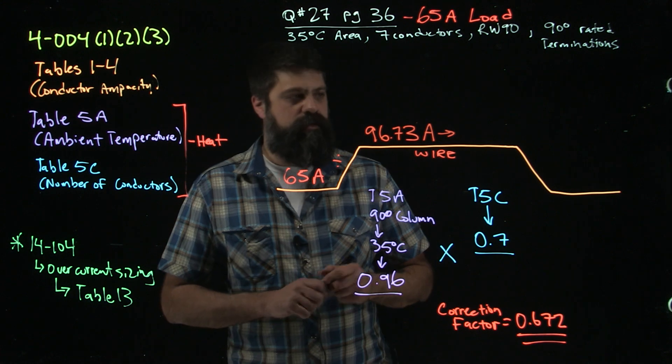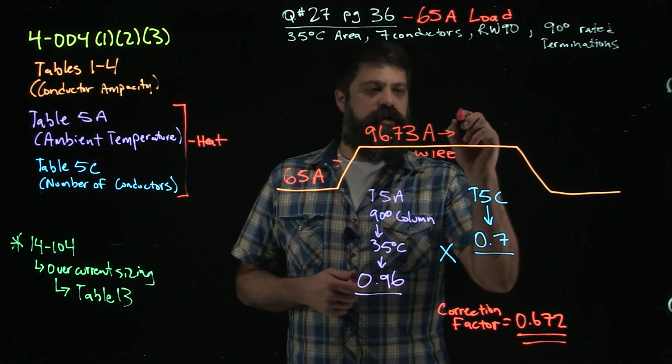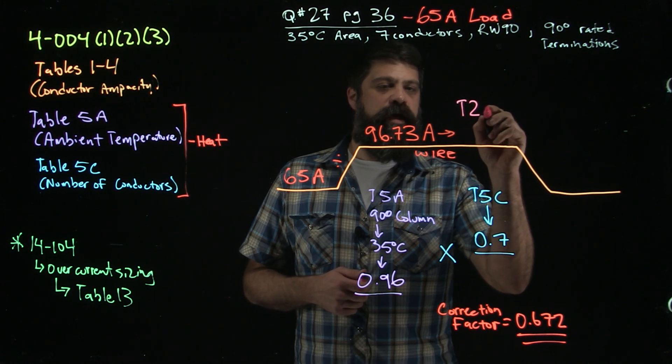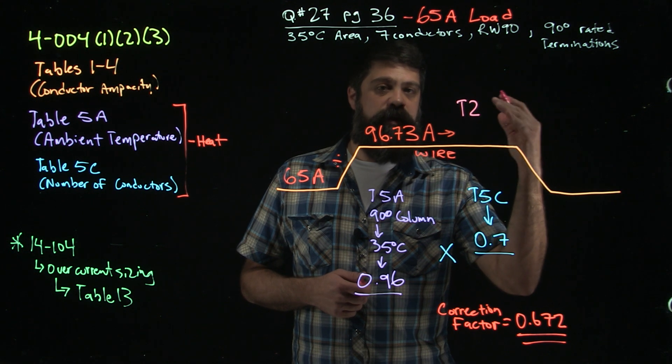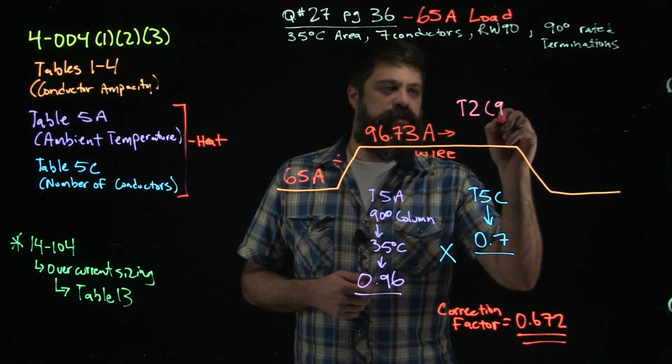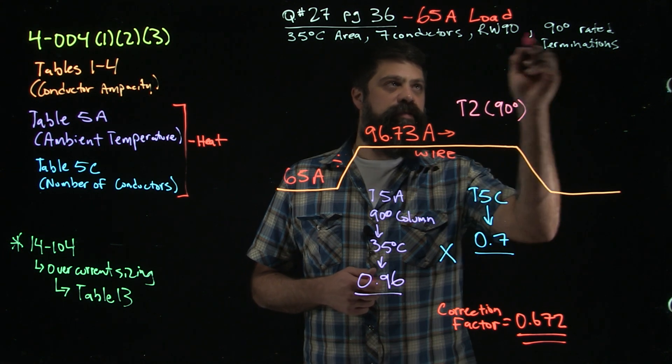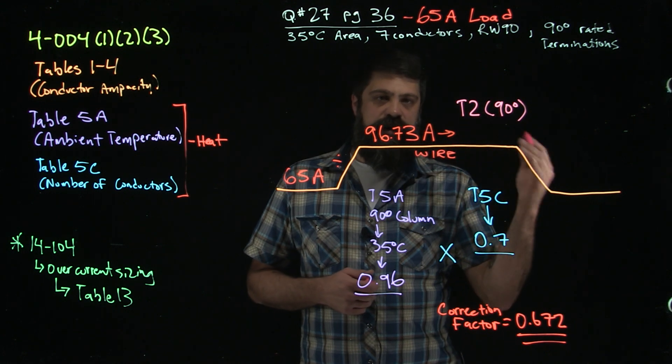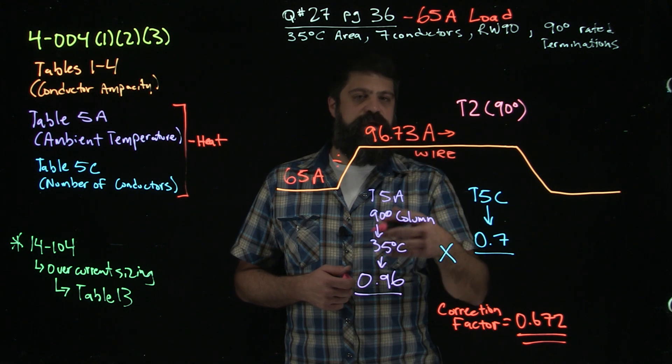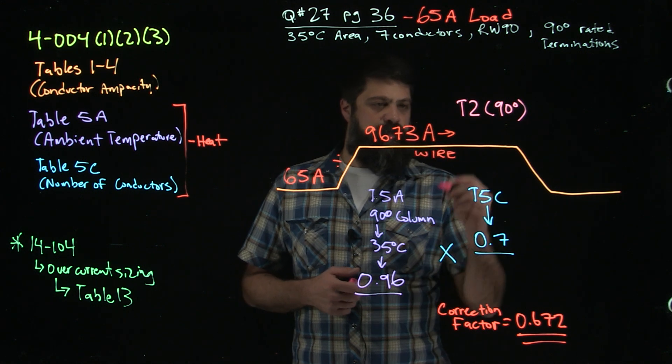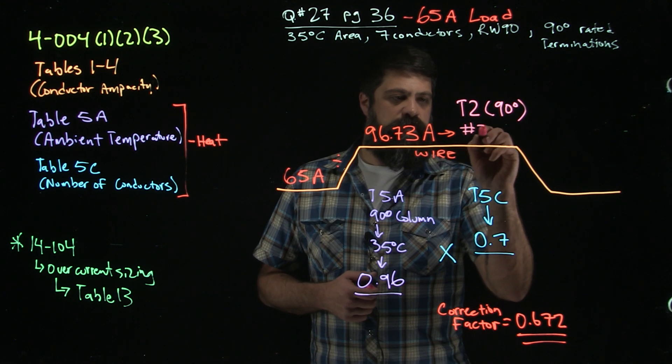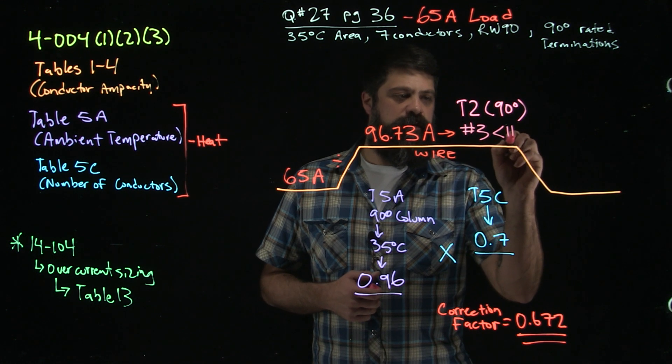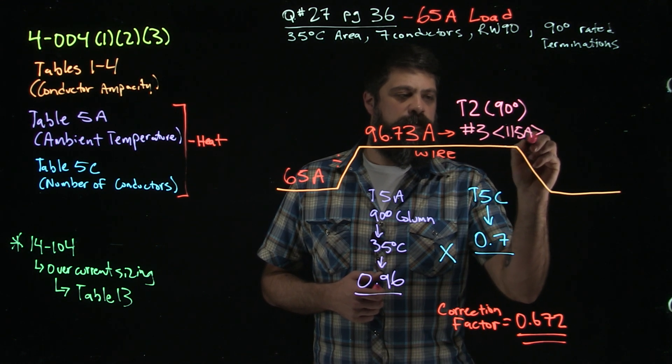If I take 96.73 amps, now I'm going to take that to Table 2 again. We're still dealing with copper conductors, and now instead of looking in the 75 degree column like we have been, we're going to move over to the 90 degree column. Everything's rated for 90 degrees, means it can handle more heat. So Table 2, the 90 degree column, if I look for something that's 96.73 amps or bigger, the next one up is the number 3, which is good for 115 amps.